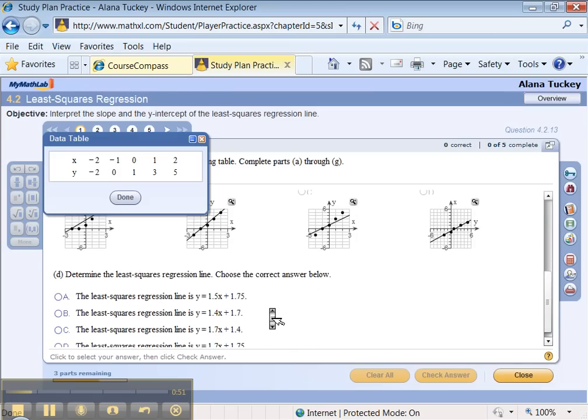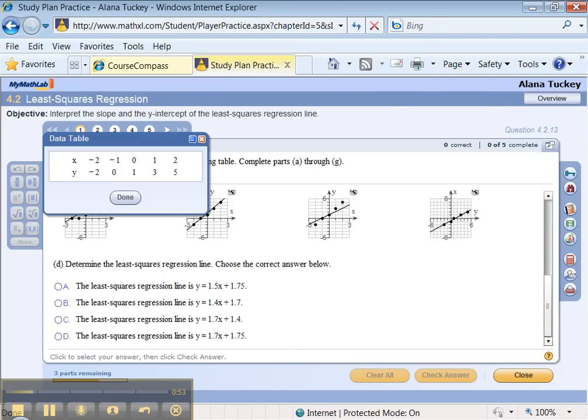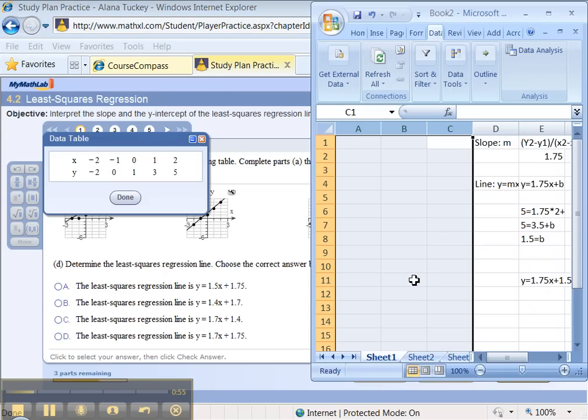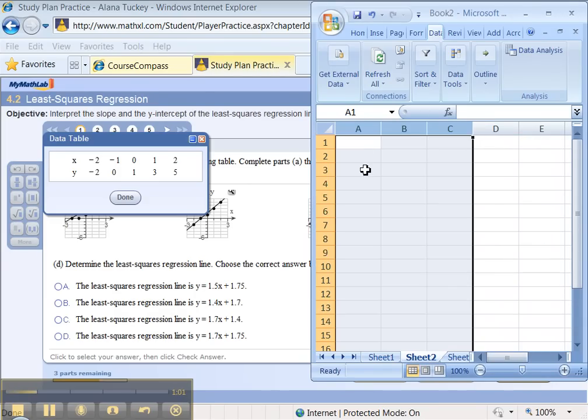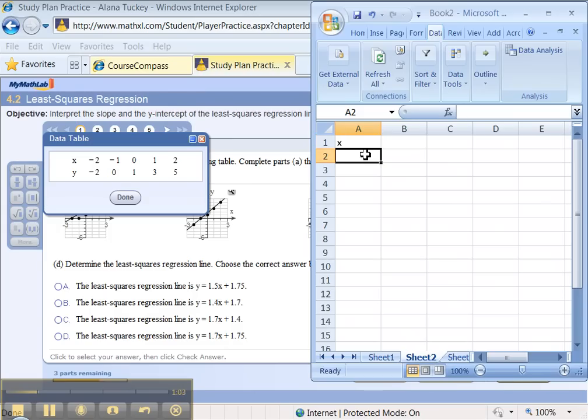Now we're supposed to find the least squares regression line. So let me open up Excel. And there's my work from before. I'm going to go to a fresh sheet and I'm going to type in my data. I'll pause it, you don't have to watch me type.